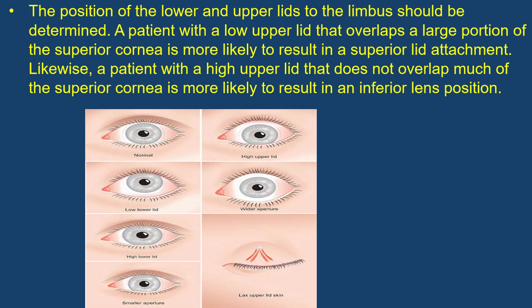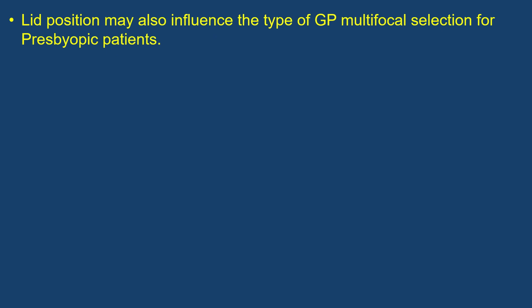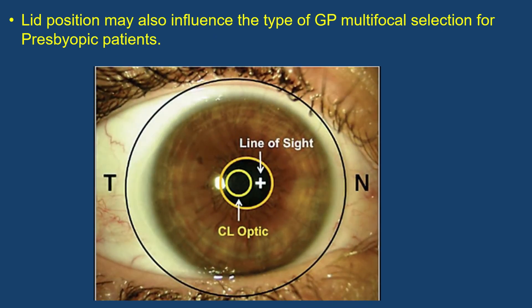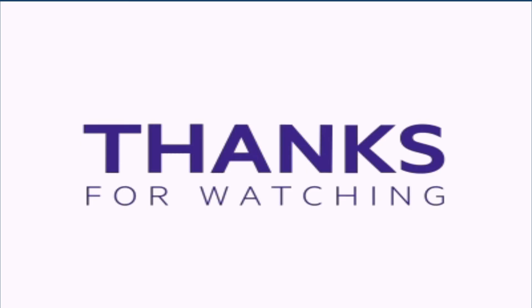Likewise, a patient with a higher upper lid that does not overlap much of the superior cornea is more likely to result in an inferior lens position. Lid position may also influence the type of GP multifocal selection for presbyopic patients.